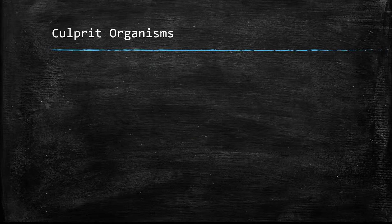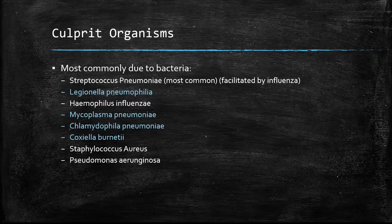What organisms cause pneumonia? The organisms shown in blue are known as atypical organisms. They cause atypical pneumonia, or walking pneumonia, which presents differently to standard pneumonia and often includes vague symptoms. The most common bacteria causing pneumonia is Streptococcus pneumoniae, and this is often facilitated by the influenza virus. Moraxella, Haemophilus, Mycoplasma, Chlamydophila, Coxiella, Staph aureus, and Pseudomonas can also cause pneumonia. Pseudomonas is of great concern in immunocompromised patients and also those with cystic fibrosis and existing bronchiectasis.